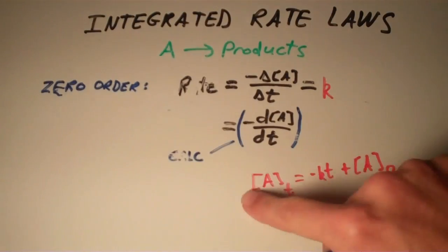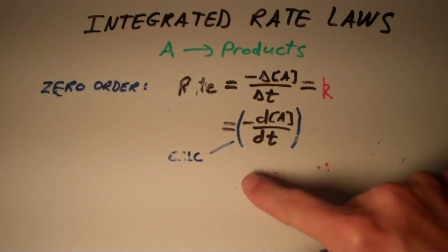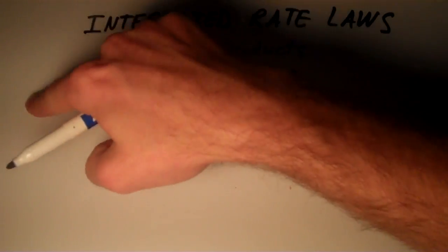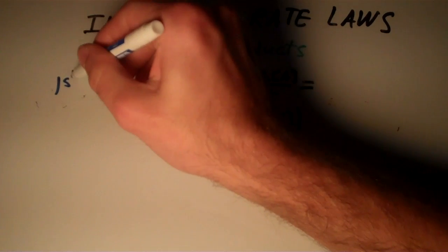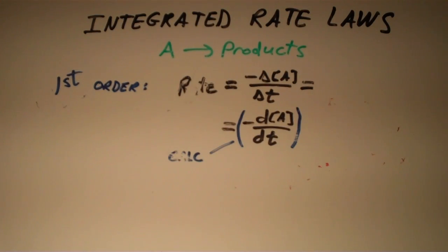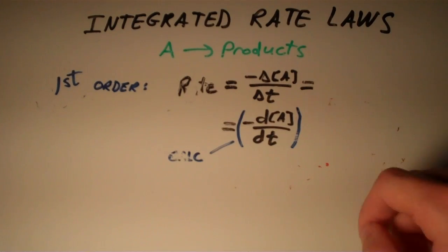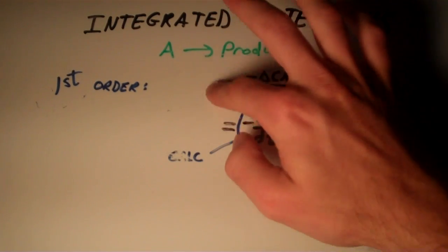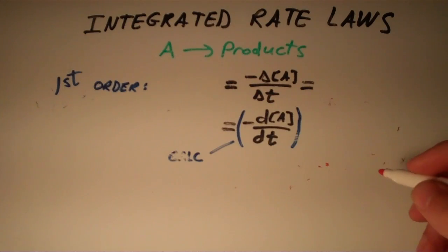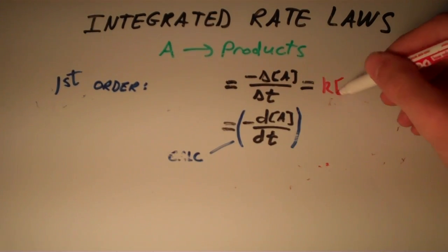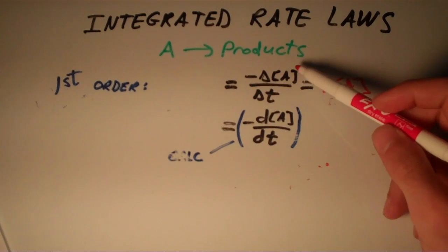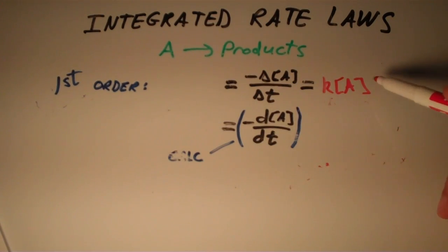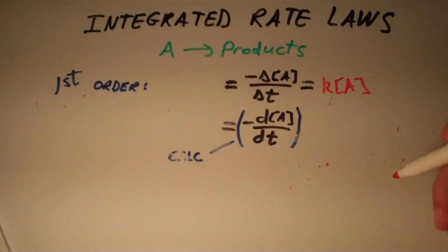That was the zero order integrated rate law. Now let's move on to a first order integrated rate law. For the first order integrated rate law, the rate is equal to K times the concentration of A to the first power, or just K times [A]. So we have negative Δ[A]/ΔT equals K times [A], because this is first order.